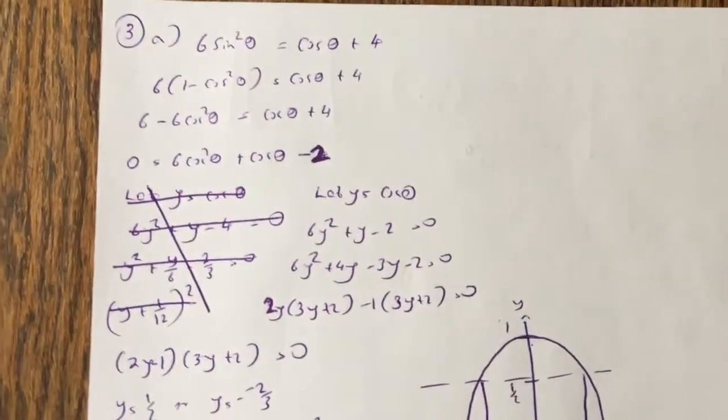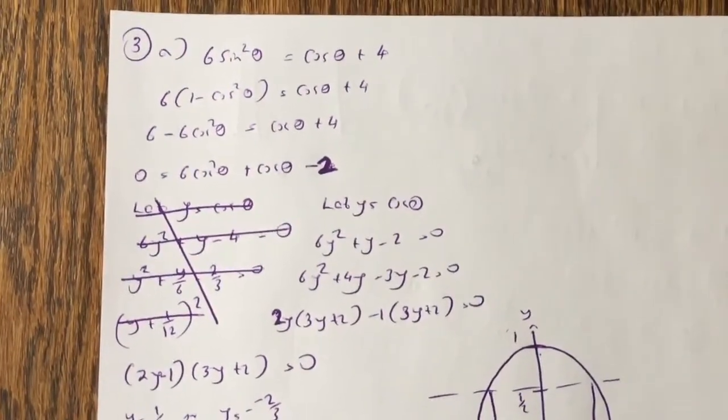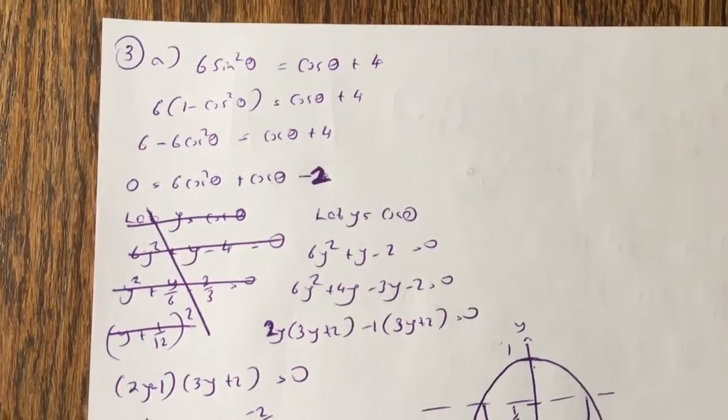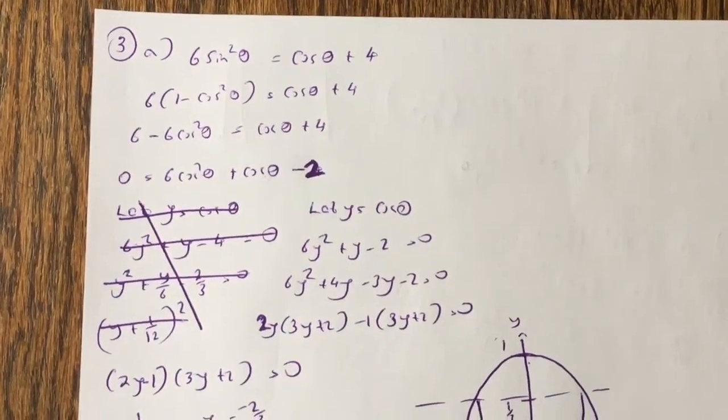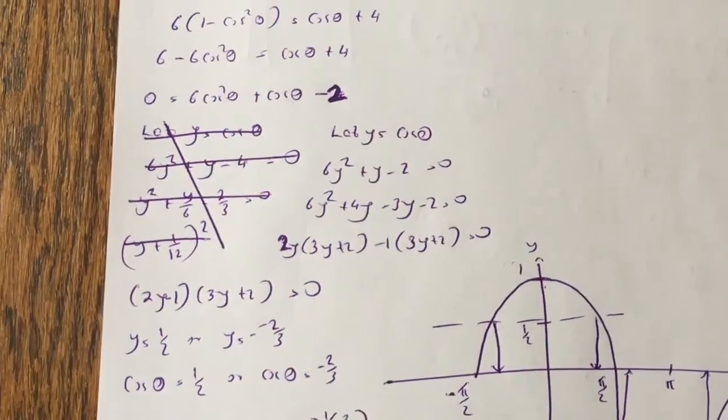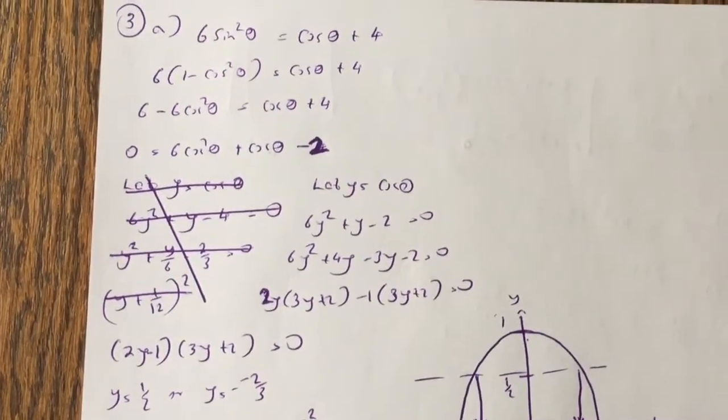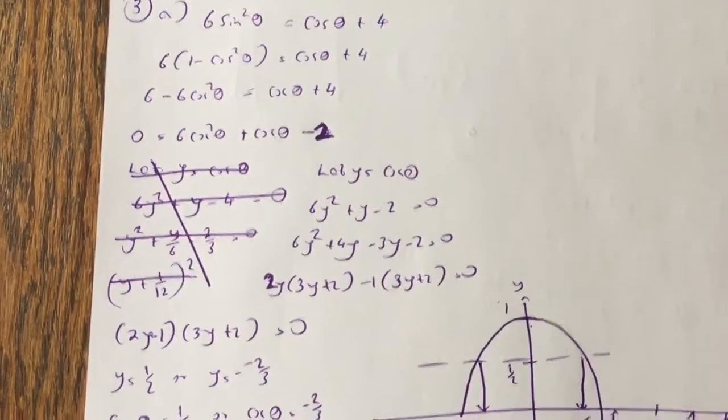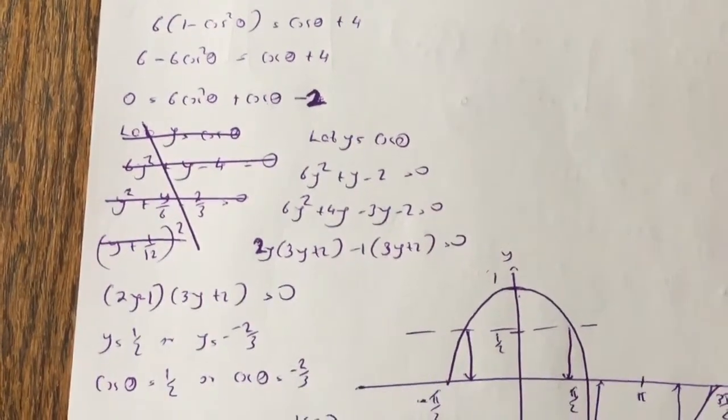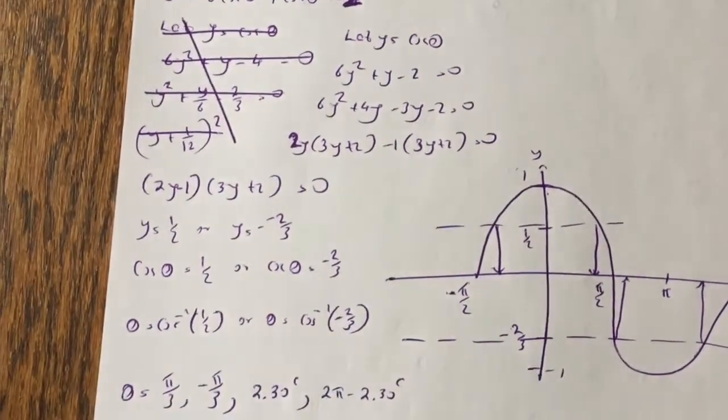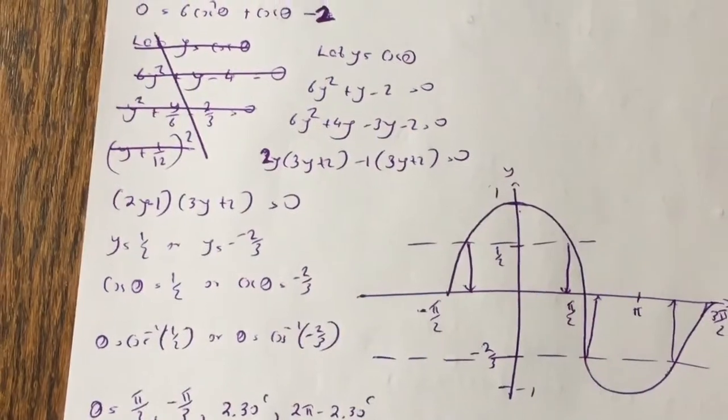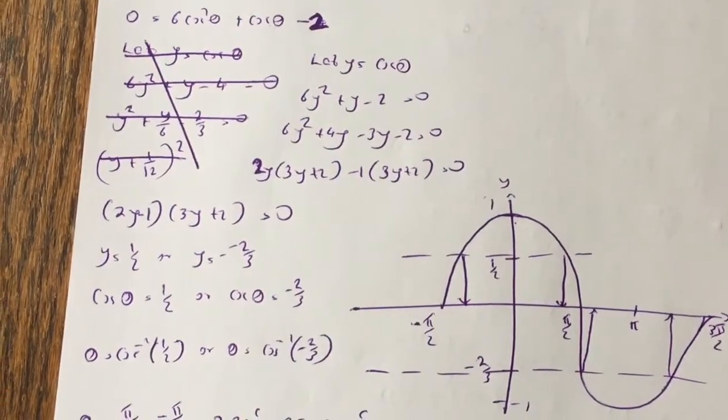Okay, so we have a trigonometric equation, 6 sine squared theta equals cos theta plus 4, so you change the sine squared to 1 minus cos squared, you simplify, you get this quadratic, 6 cos squared theta plus cos theta minus 2, equal to 0. We let y equals cos theta, and you solve it. You get cos theta equals 1 half, or cos theta equals minus 2 thirds.